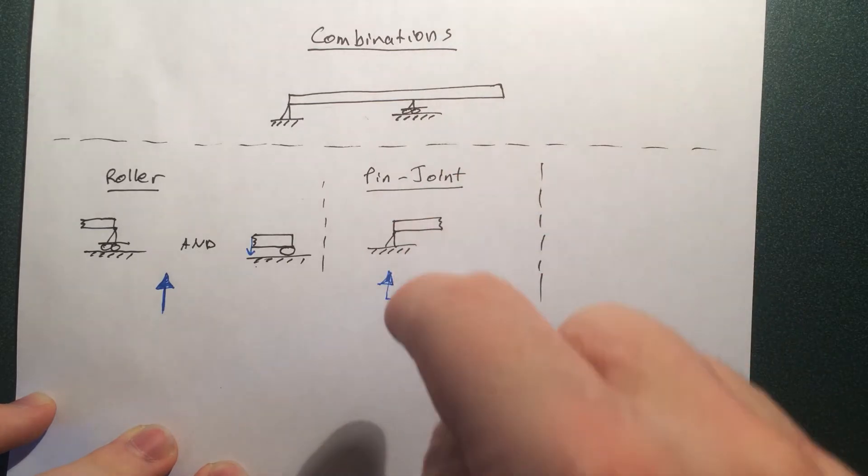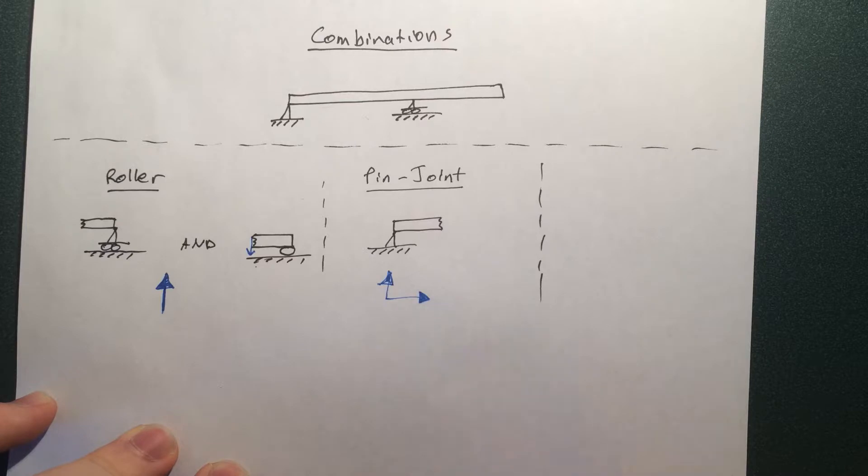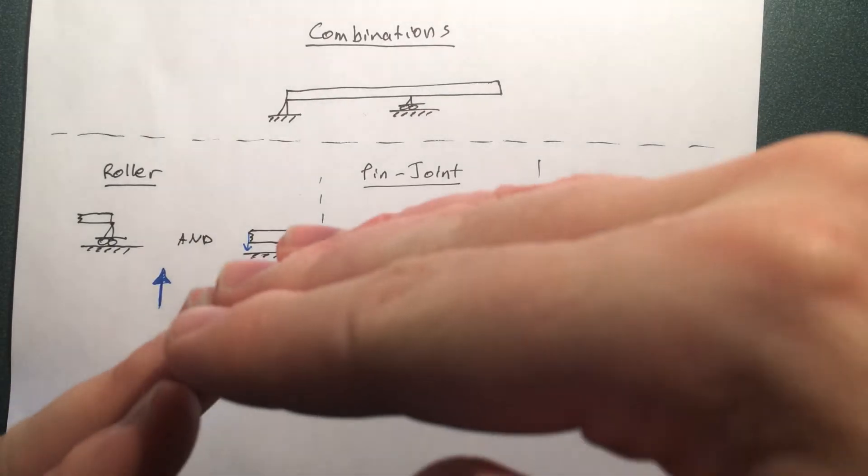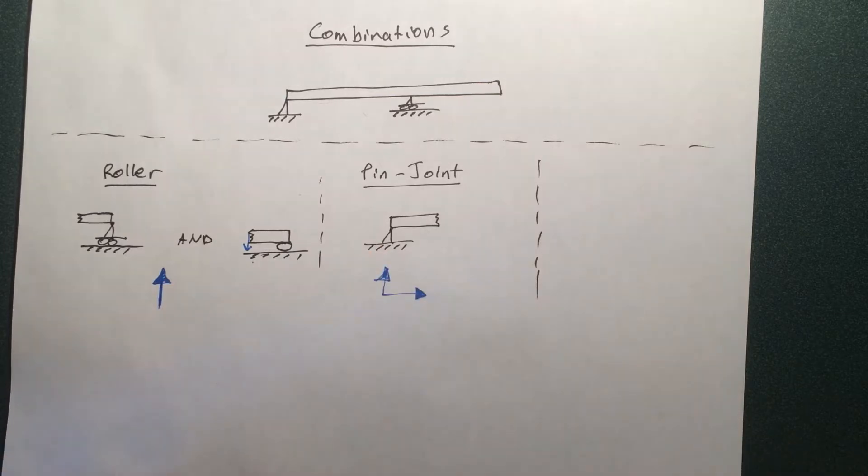I call it a pin jointed, because essentially there's like a pin through here. And that also prevents it from resisting a moment. You can pull down on this thing, but if it's pinned through, that pin will just allow it to move freely, just like an excavator with its arms. That's a pin joint. It's allowed to move freely even though it resists forces. You can still twist.